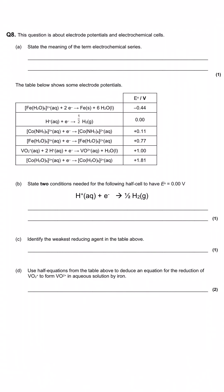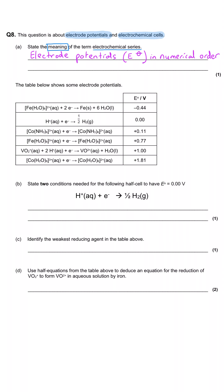This question is about electrode potentials and electrochemical cells. It asks us to state the meaning of the term 'electrochemical series.' They've actually given us an example here. An electrochemical series is where you show a series of electrode potentials in a particular numerical order. Alternatively, we could remark that we've got a series of half equations shown in order of their electrode potential. Either of those is fine for the one mark.